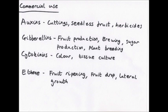Gibberellins are used in fruit production, brewing, sugar production, and plant breeding. For fruit production, gibberellins delay senescence in citrus fruits, extending the time fruits can be left unpicked. Gibberellins acting with cytokinins can make apples elongate to improve their shape. Without gibberellins, bunches of grapes are very compact, restricting growth of individual grapes — adding gibberellins creates more space so the grapes get bigger.